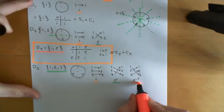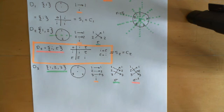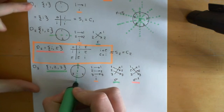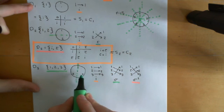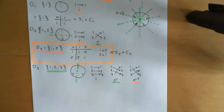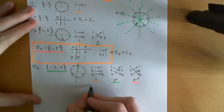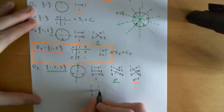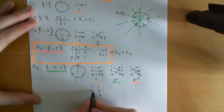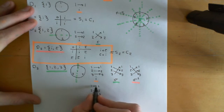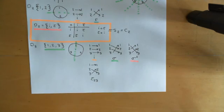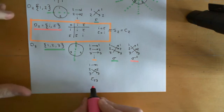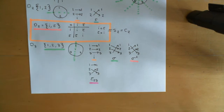Those are all the cyclic permutations — the ones we had in C3. However, we now have flips to add on. We could flip down the line of symmetry through 1. If we flip down that line of symmetry, we hold 1 constant, send 2 to where 3 is and 3 to where 2 is. We call that the transposition of 2 and 3, denoted tau(2,3).